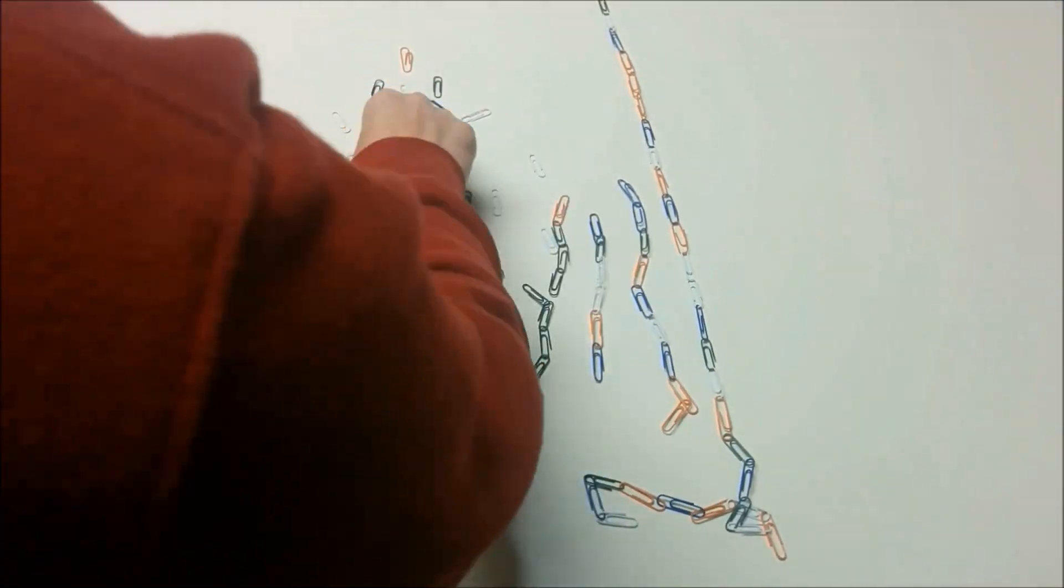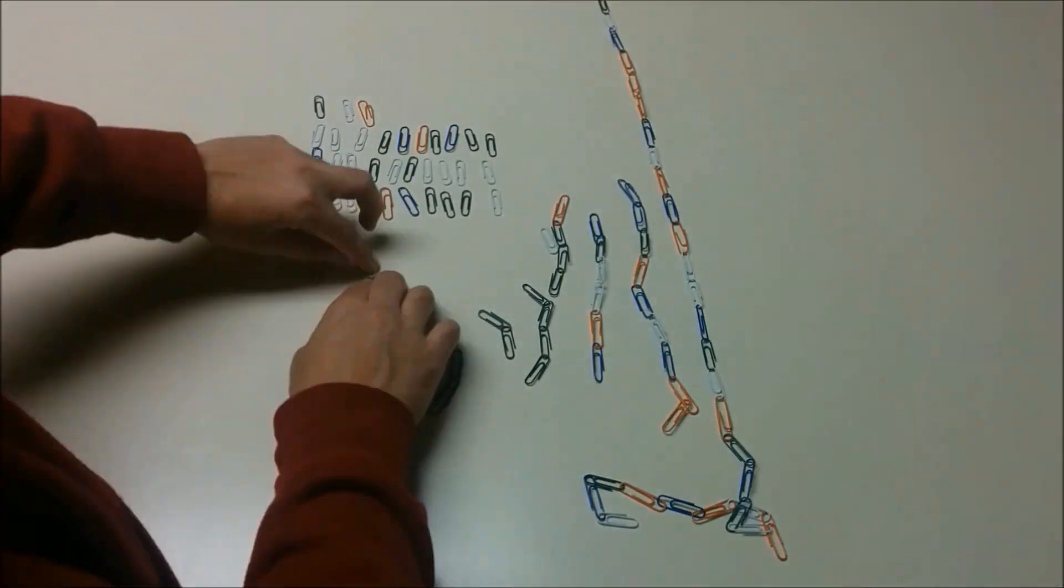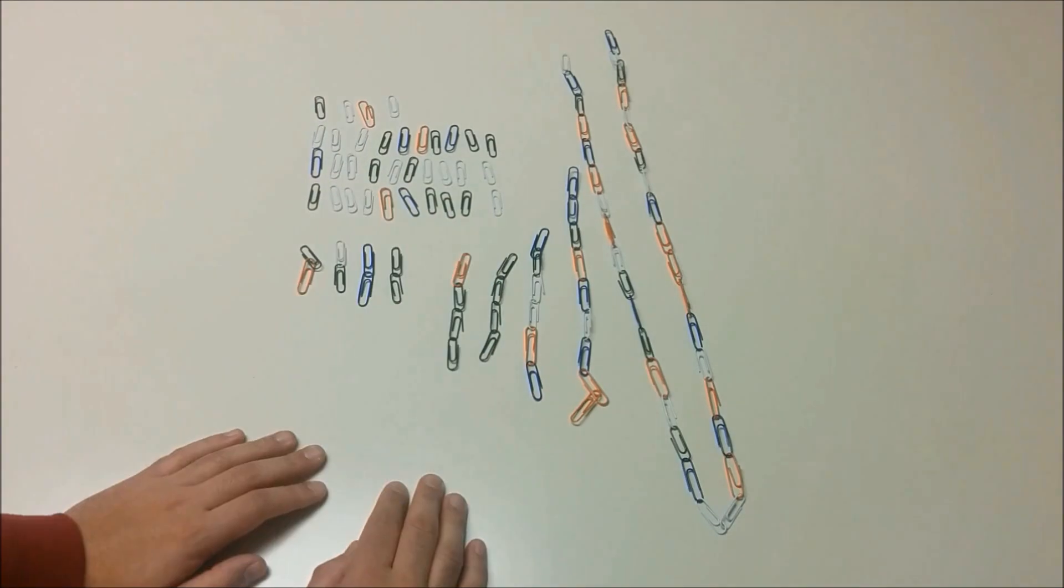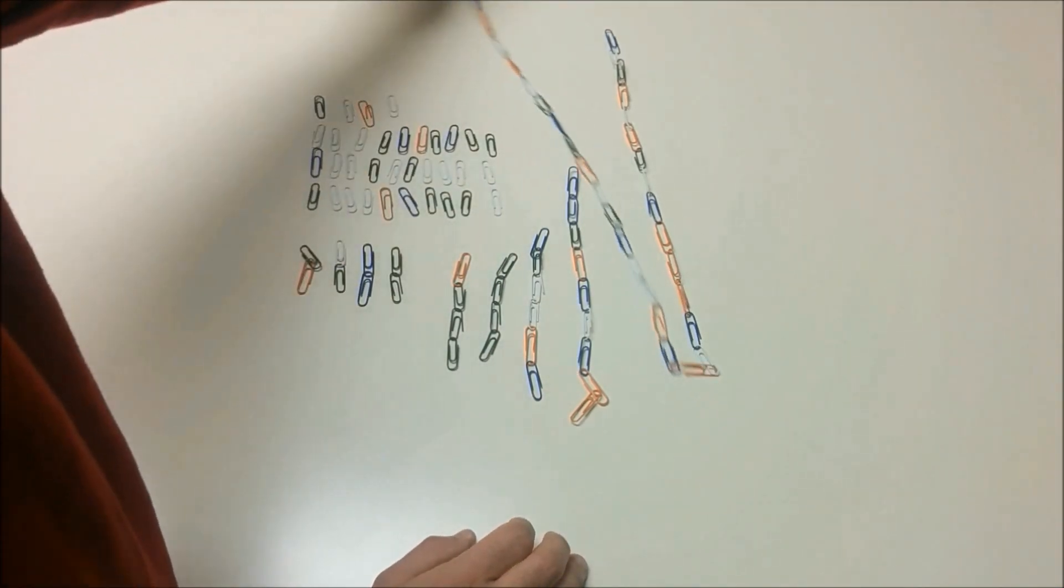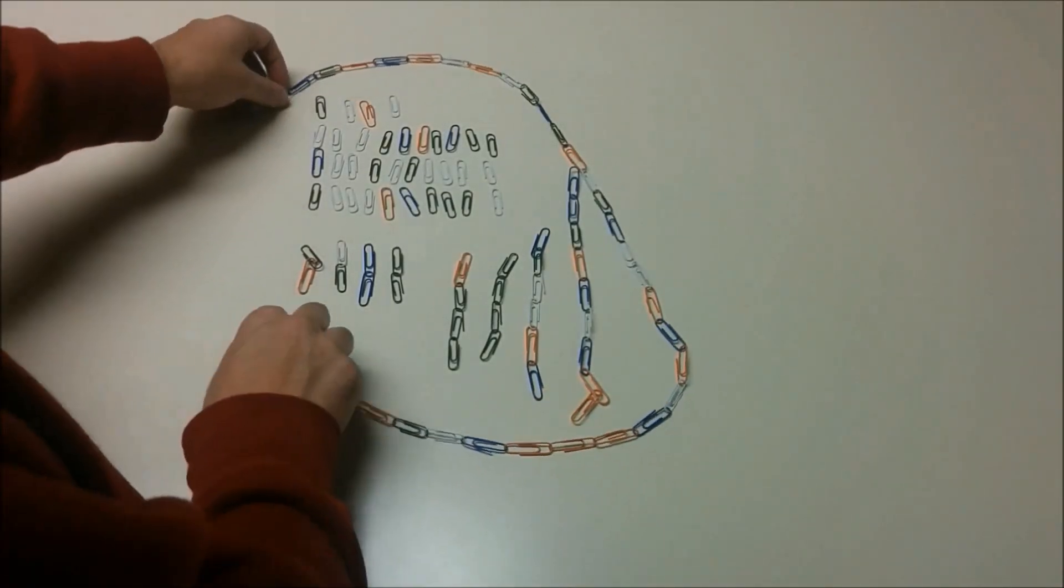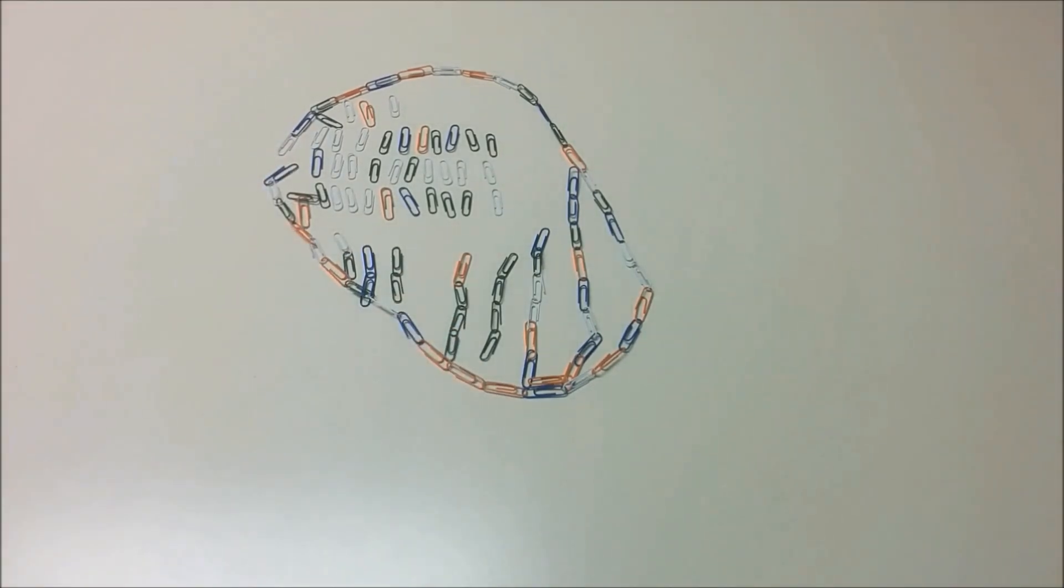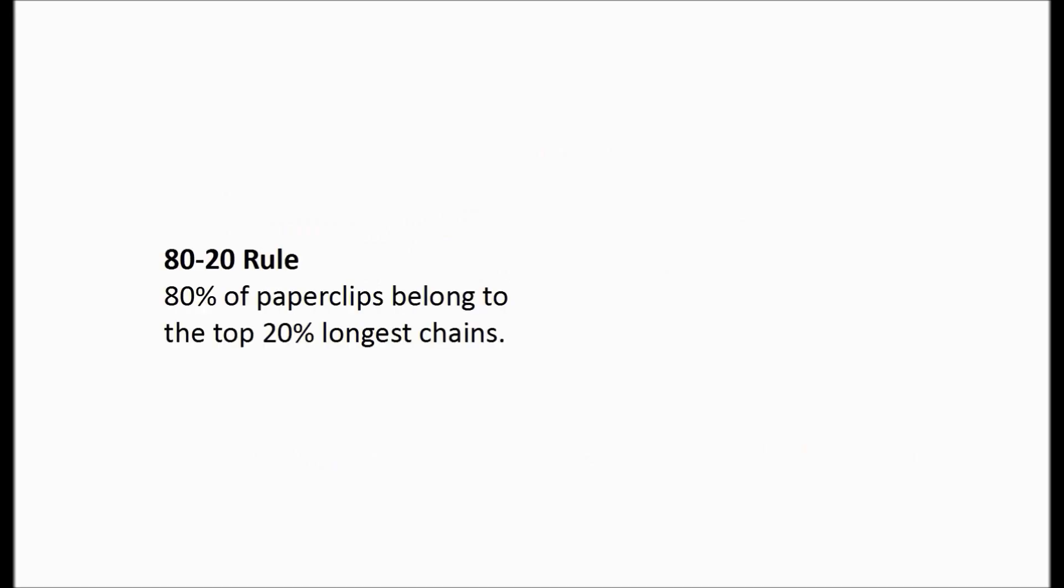In our distribution of paperclip chains, there will be many paperclips that are single and by themselves, and a few paperclips which are very long chains. And this is where the 80-20 rule can be illustrated. 80% of the paperclips belong to the top 20% of the longest chains.